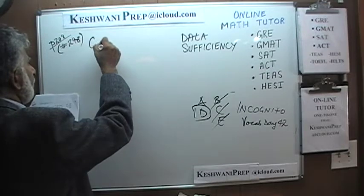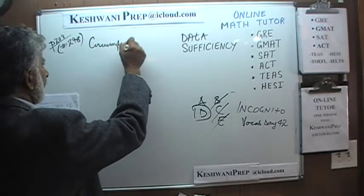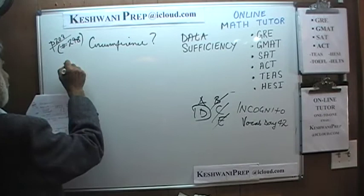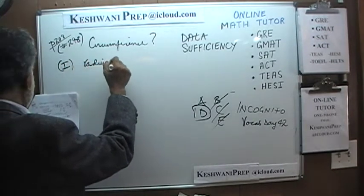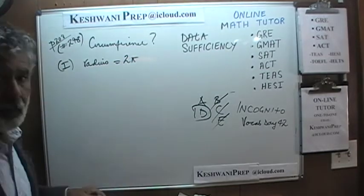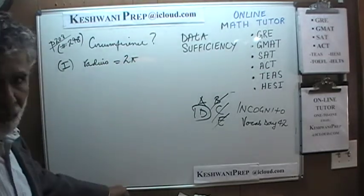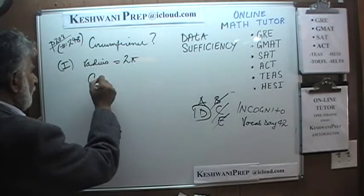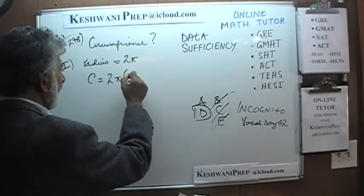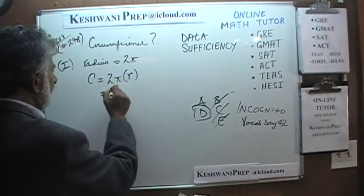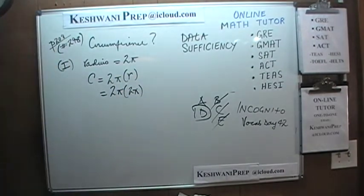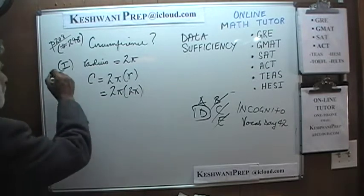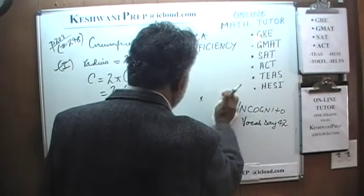In number 298, the question is: how much is the circumference? The first statement tells us that the radius equals 2π. The circumference is 2πr, and since r is 2π, the circumference is simply 2π times 2π, which is 4π squared. The first statement by itself is enough, so the answer is either A or D.